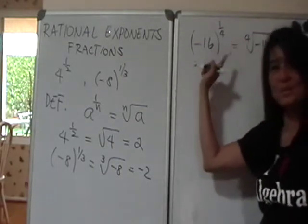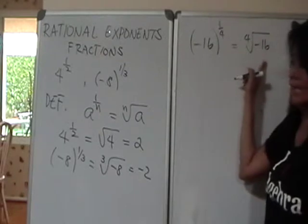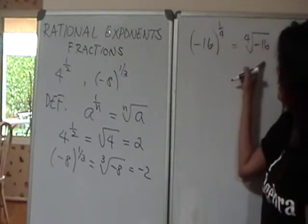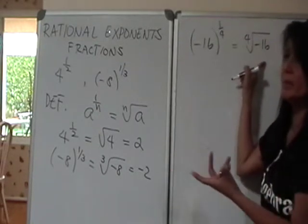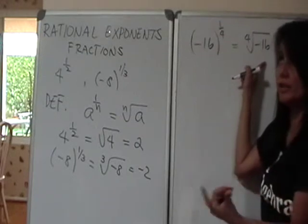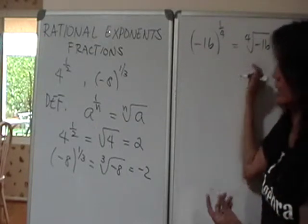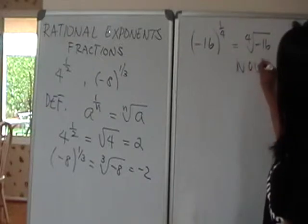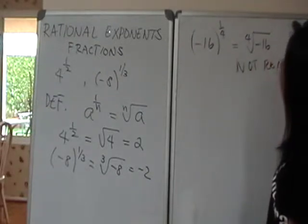You cannot take the square root, the fourth root, the sixth root of something that's negative. Because you cannot have an even number of factors that will give you a negative answer. So this one won't work. This is not a real number.